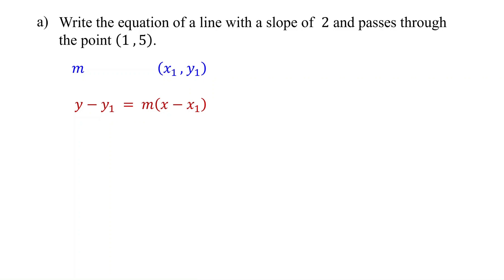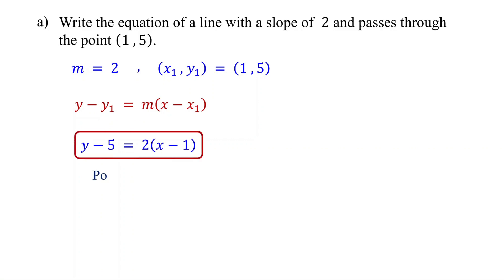In this example, the slope is 2 and the point is (1, 5), so x1 is 1 and y1 is 5. Next, substitute these values into the point-slope form: replace y1 with 5, m with 2, and x1 with 1. That's it — this is the equation of the line in point-slope form.